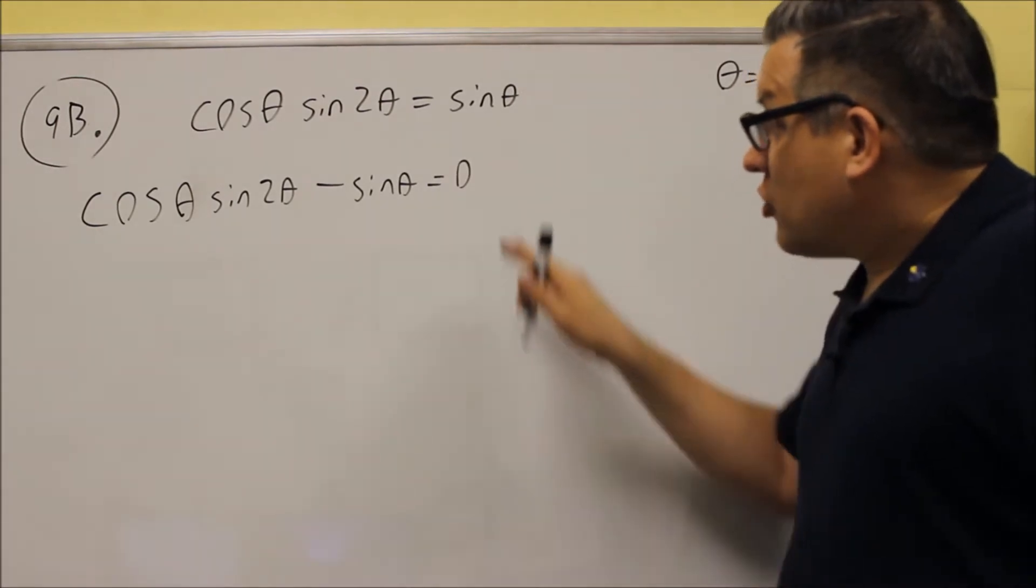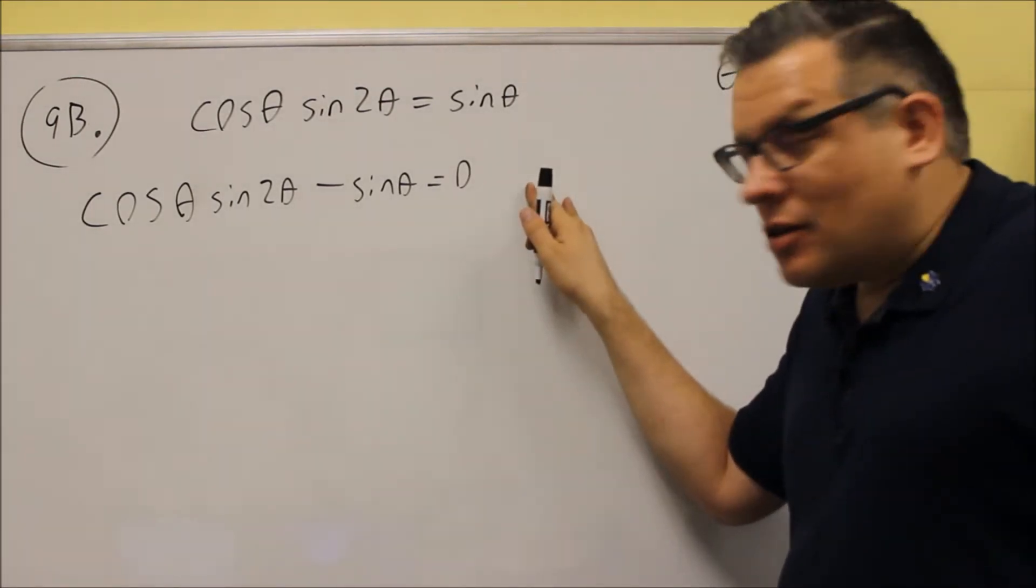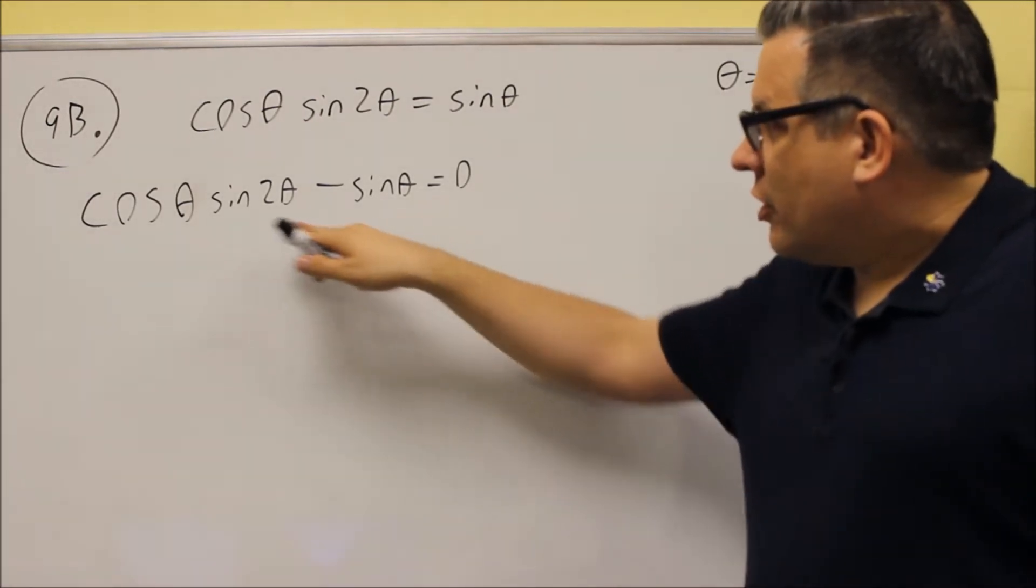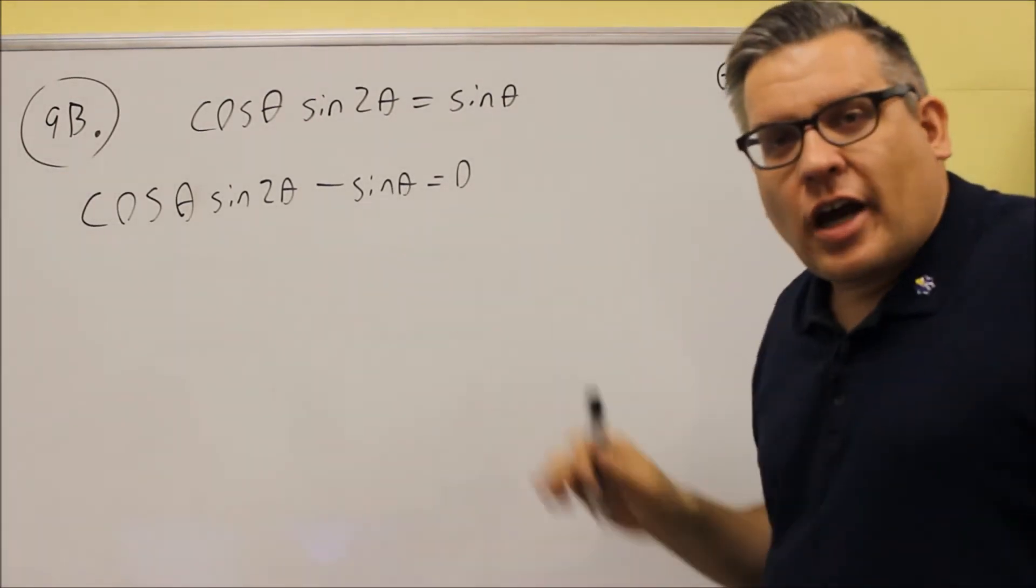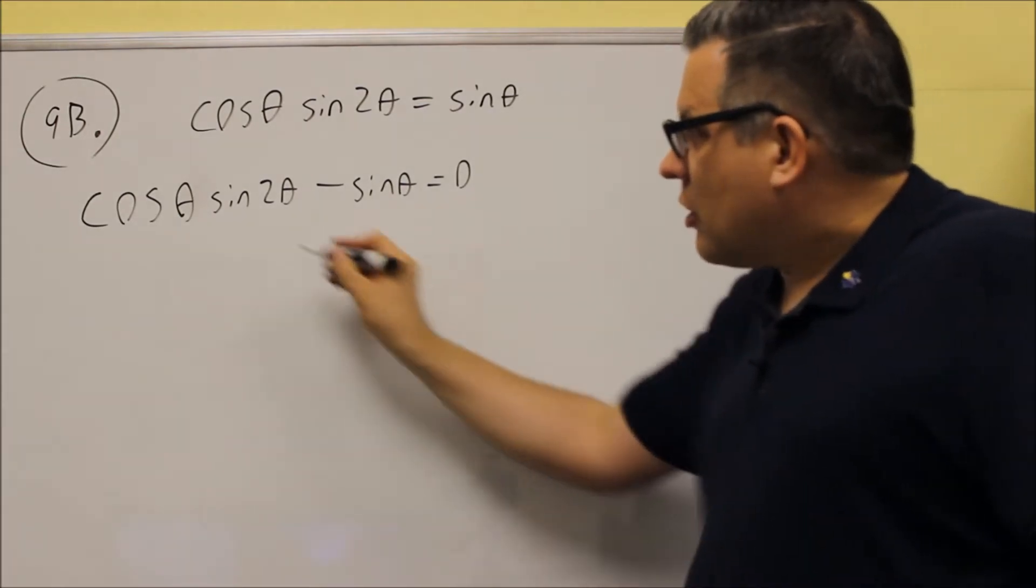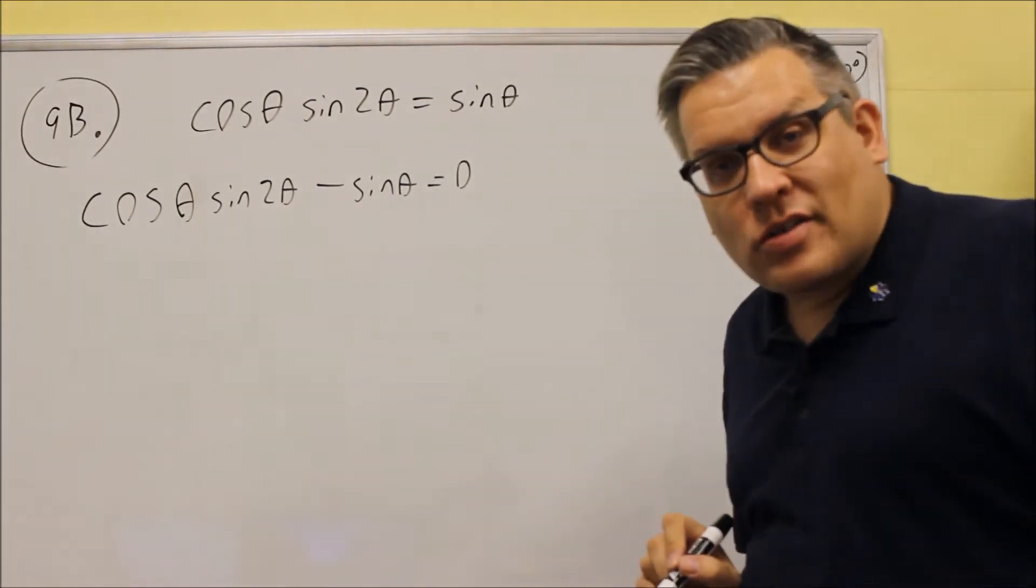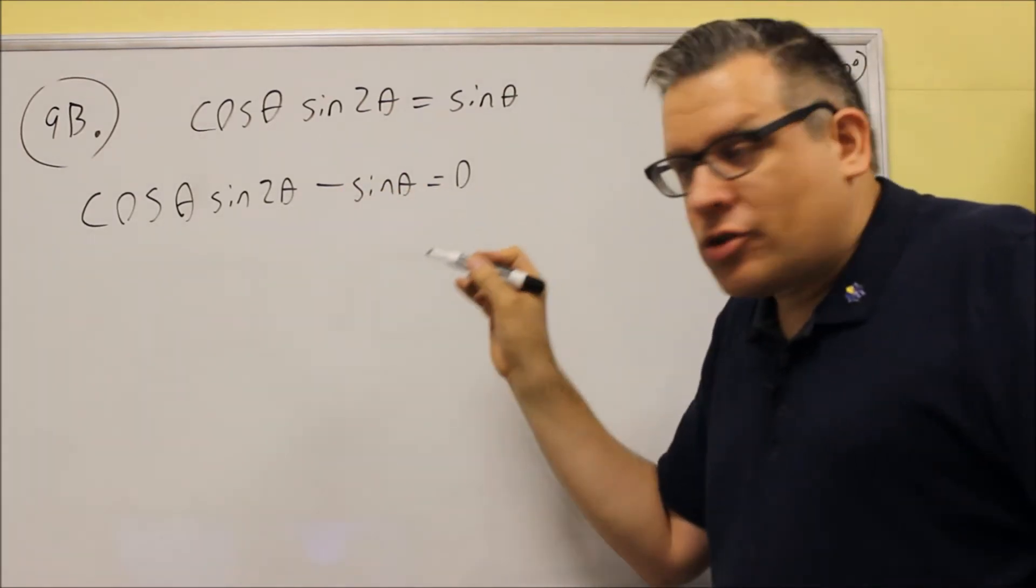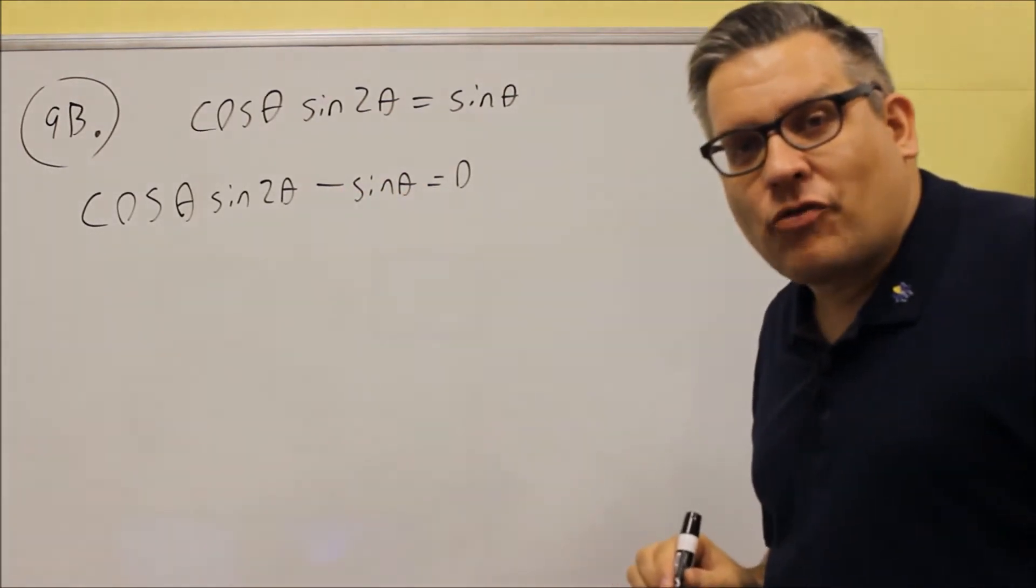You always want to make sure you have a 0 on this side in order to solve it. Now what's left here, unfortunately we can't take out a common factor on this one because although there's a sine that's repeated twice, this one has a 2 theta and this one has a theta. So these are not considered like terms, so you're not allowed to take out a common factor.